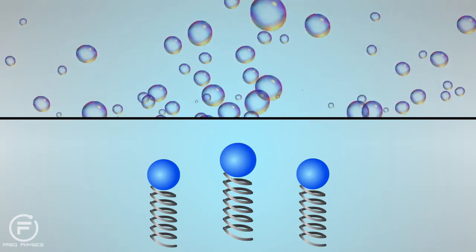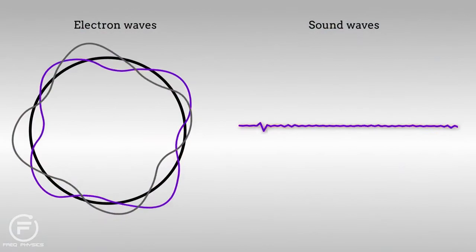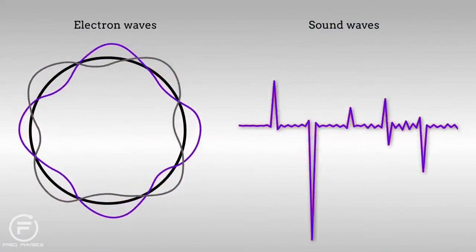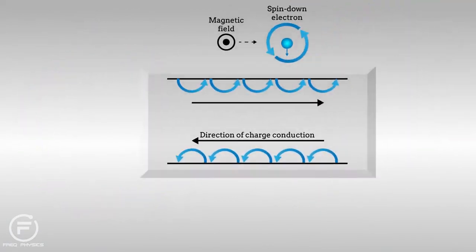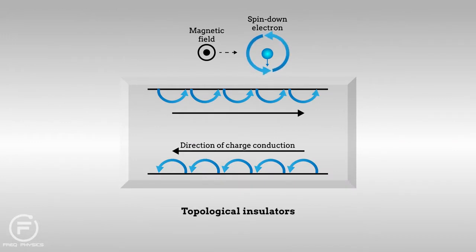In this spirit of simplification, researchers recently exploited the analogy between electron waves and sound waves to design an acoustic model of exotic materials called topological insulators.